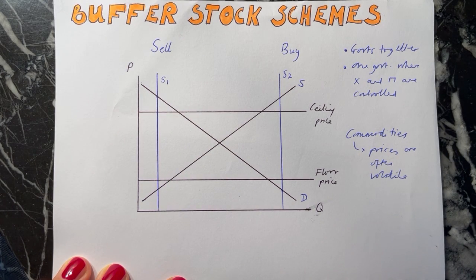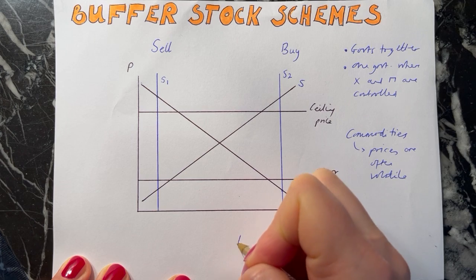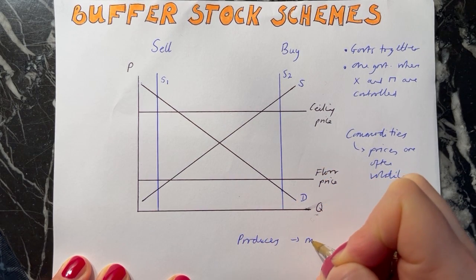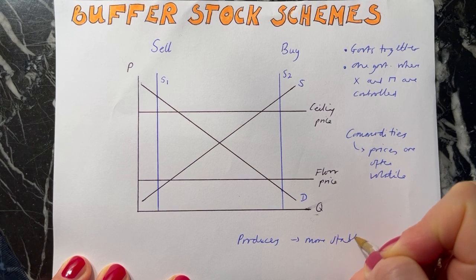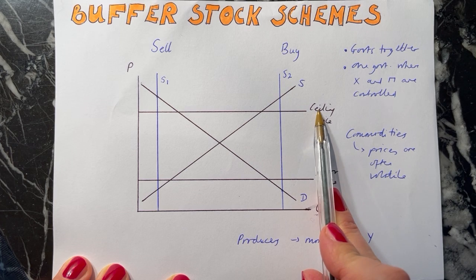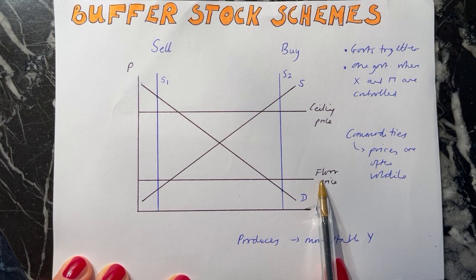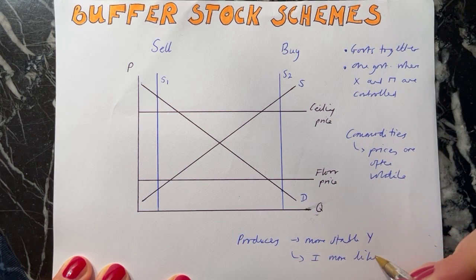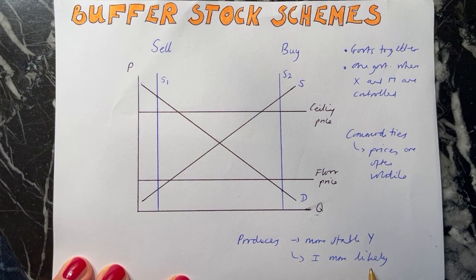Buffer stock schemes are considered particularly helpful for producers - that's who they are really aiding the most - because producers have a more stable income and more awareness of what their income may be from year to year. They know if a buffer stock scheme is operating effectively that the price can't go above the ceiling price, but it also can't fall below the floor price. And firms love certainty.